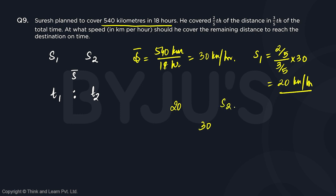We don't know the second speed. Looking at the time taken, he takes 3 fifths of the total time while covering the distance at 20 kilometers per hour — so that is 3. The remaining would be 2 fifths, which is 2.